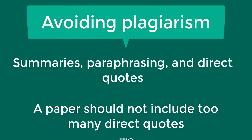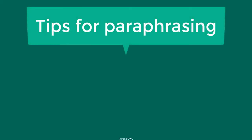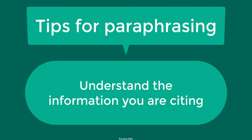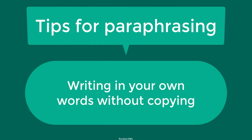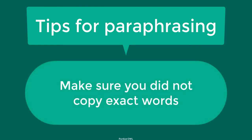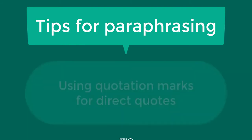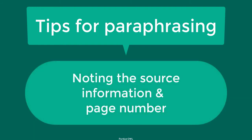Don't overuse direct quotes. Be sure that you have a good reason to include a direct quotation when you decide to do so. Tips for effective paraphrasing include re-reading the original passage until you understand its full meaning, writing your paraphrase without looking at the original, writing a note on how you plan to use the paraphrase in your paper, checking your paraphrase with the original to make sure your version shows the information in a new form, using quotation marks to identify any phrasing you borrowed exactly from the source, and making a note of the source and page number so you can credit it easily while writing your paper.